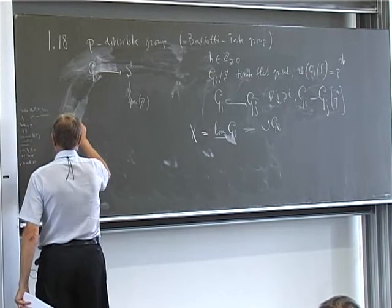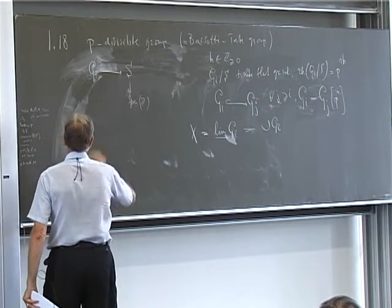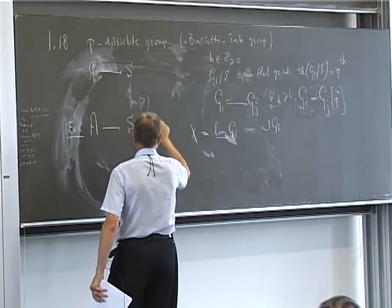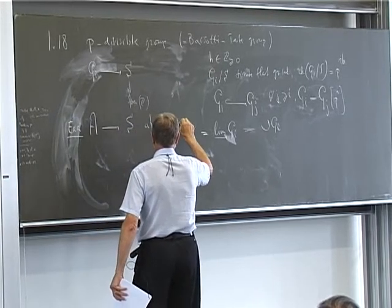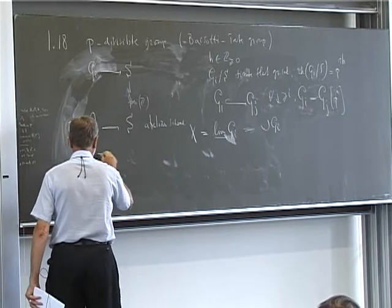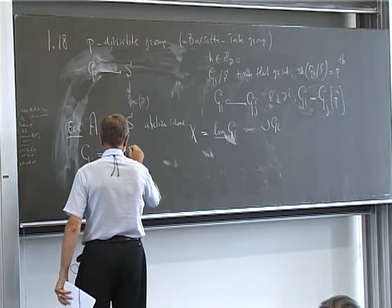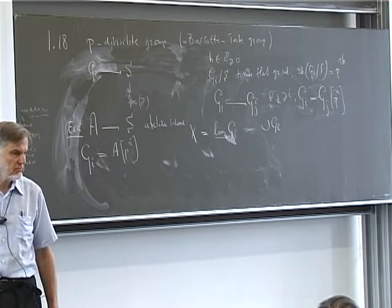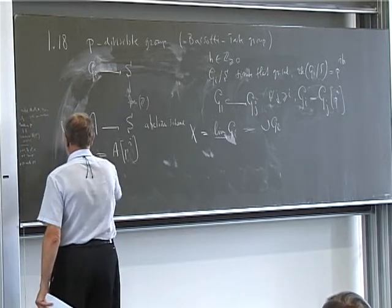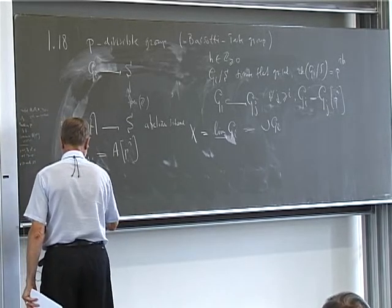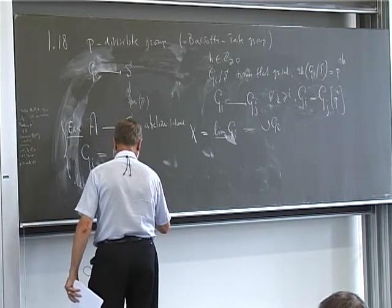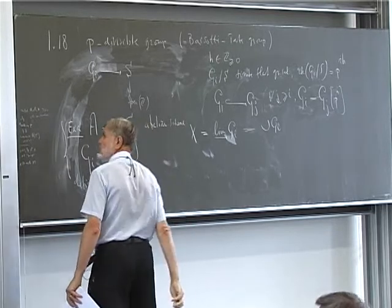The basic example is: if A is an abelian scheme, you define G_i to be the kernel of p^i on A. This defines your p-divisible group X = lim G_i.